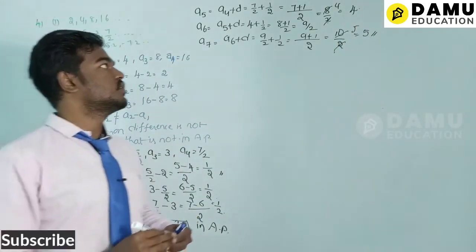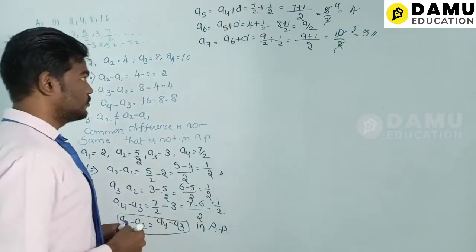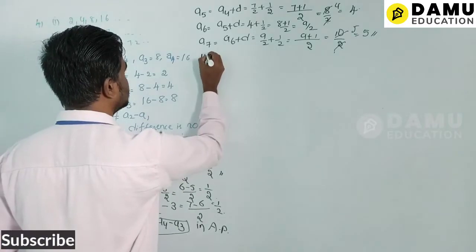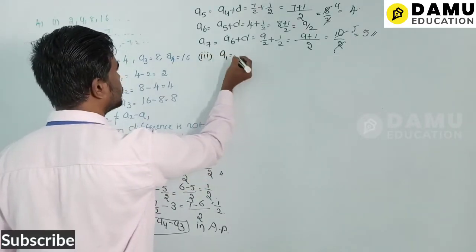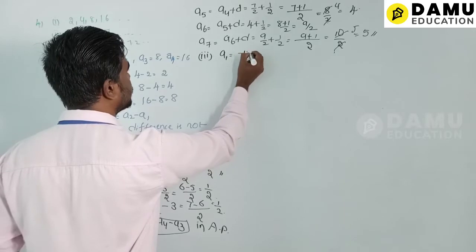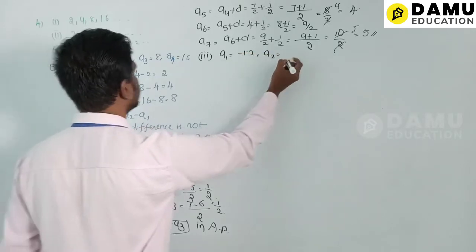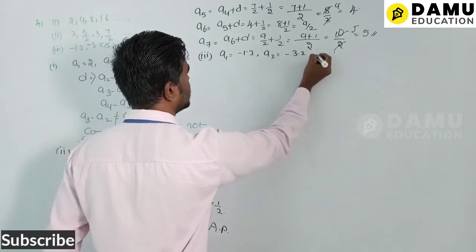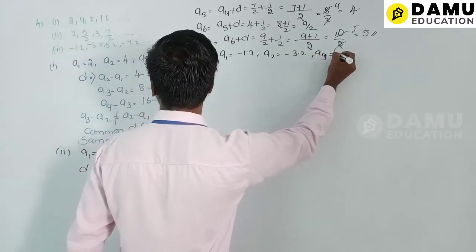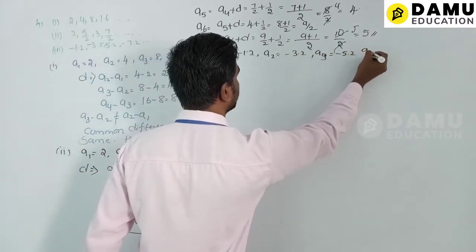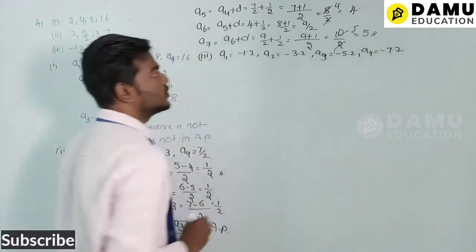For the third series: a1 = −1.2, a2 = −3.2, a3 = −5.2, a4 = −7.2. These are the given terms.